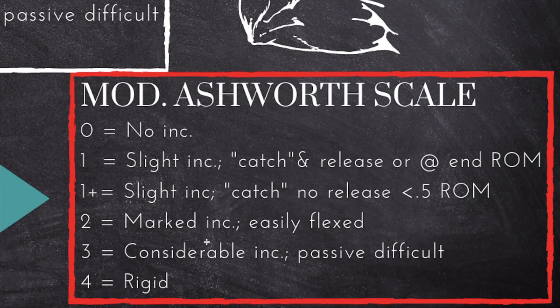Two means there's a marked increase in tone, similar to the original Ashworth, and the limb is still easily flexed by the therapist. Three means there's a considerable increase in tone, similar to the original Ashworth, meaning it's difficult for the therapist to move the limb through its passive range of motion. Four means the limb is rigid in extension or flexion, depending on what muscle groups are spastic.